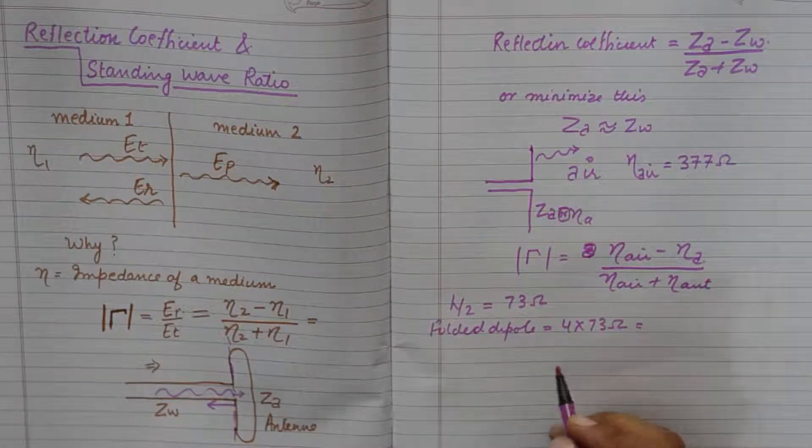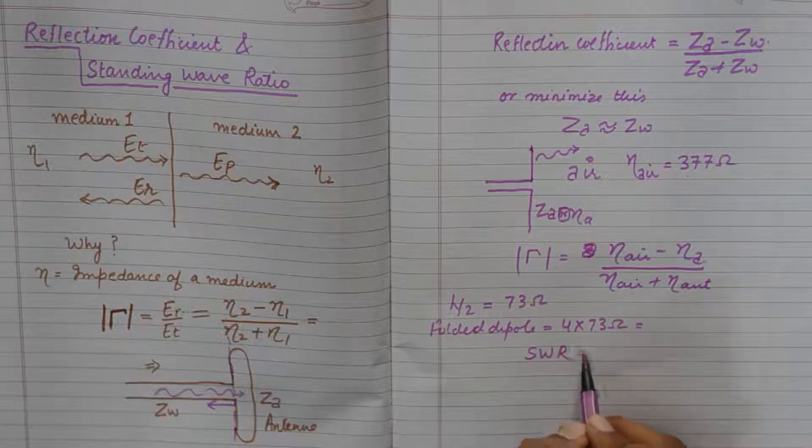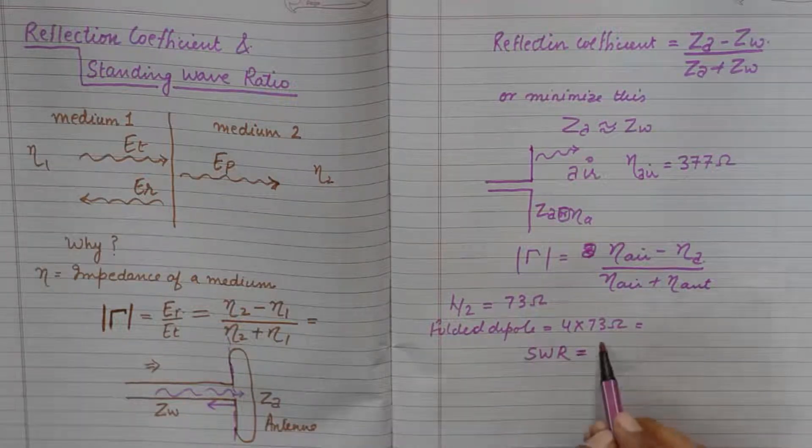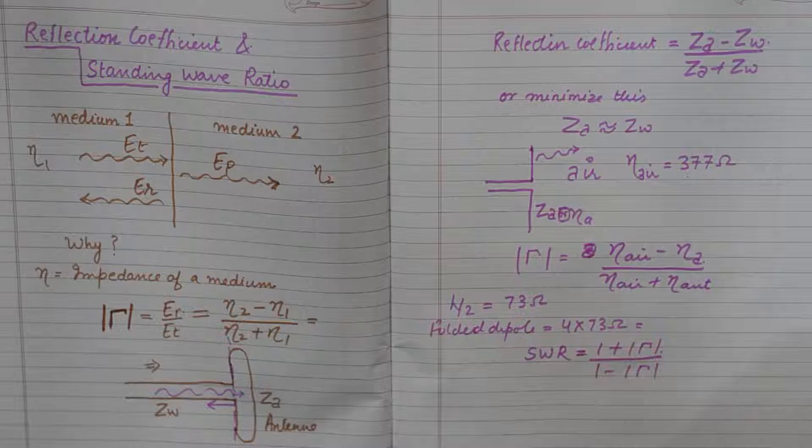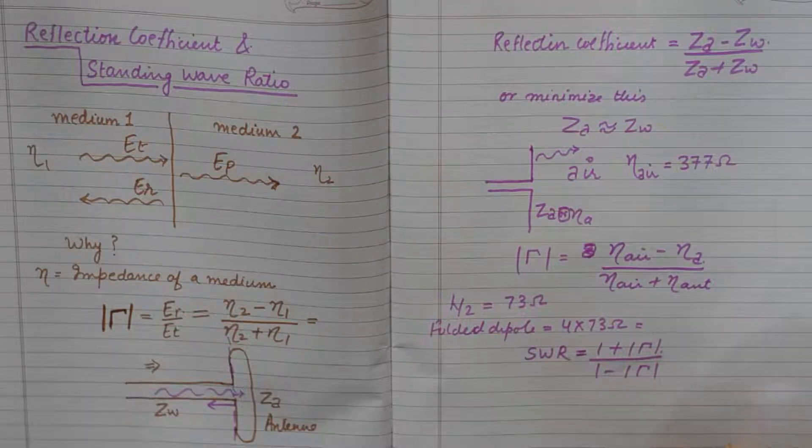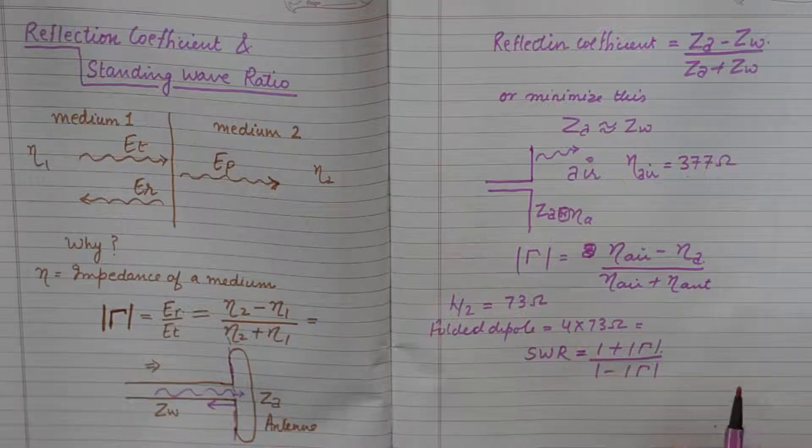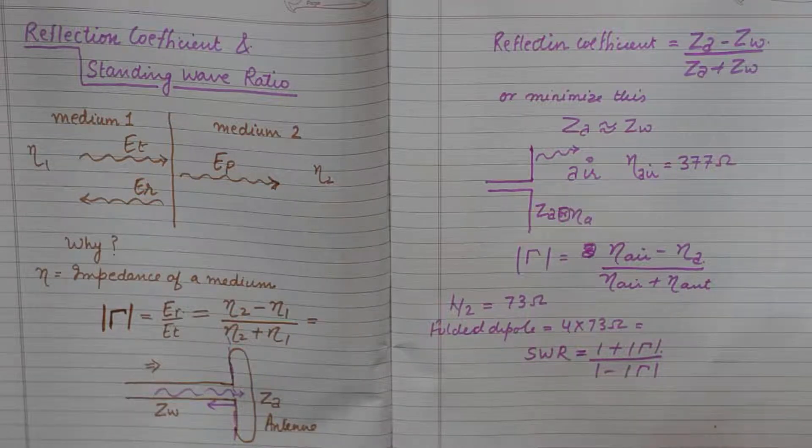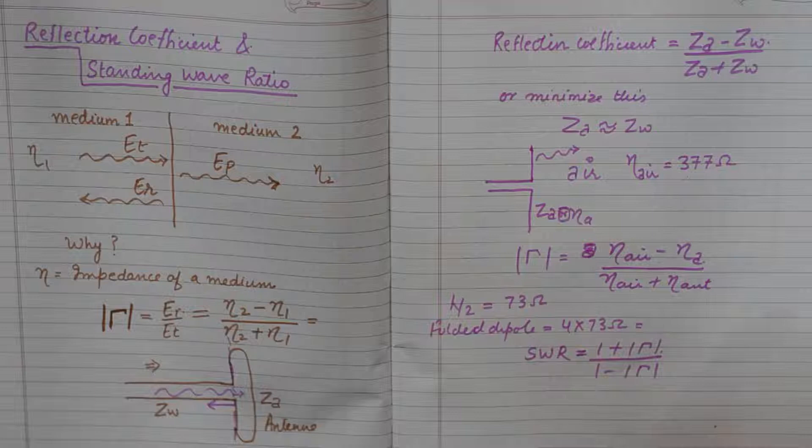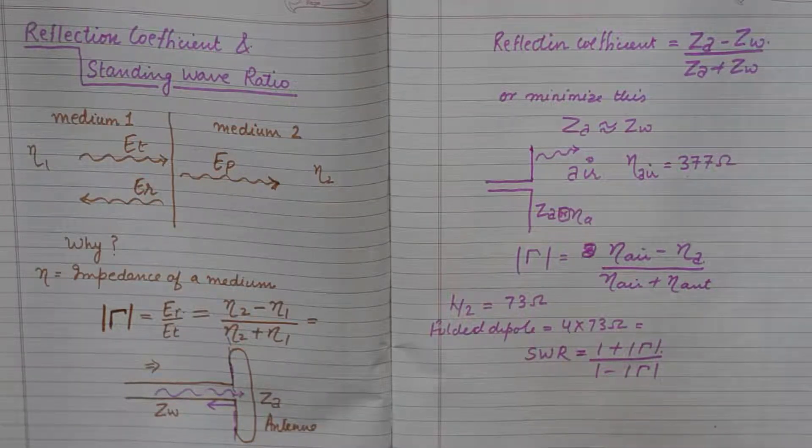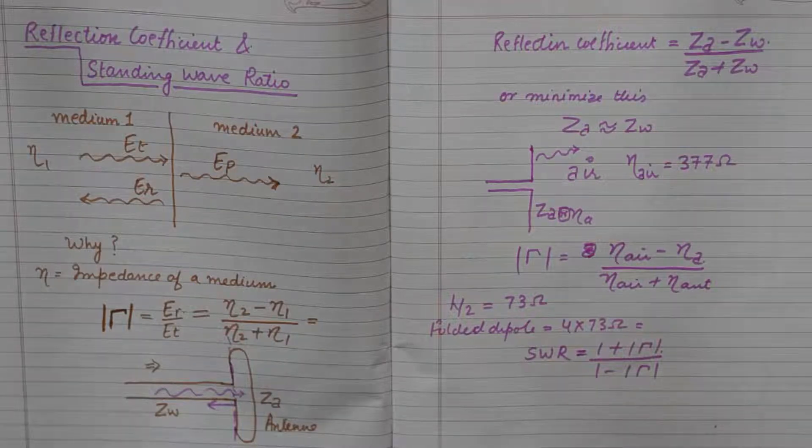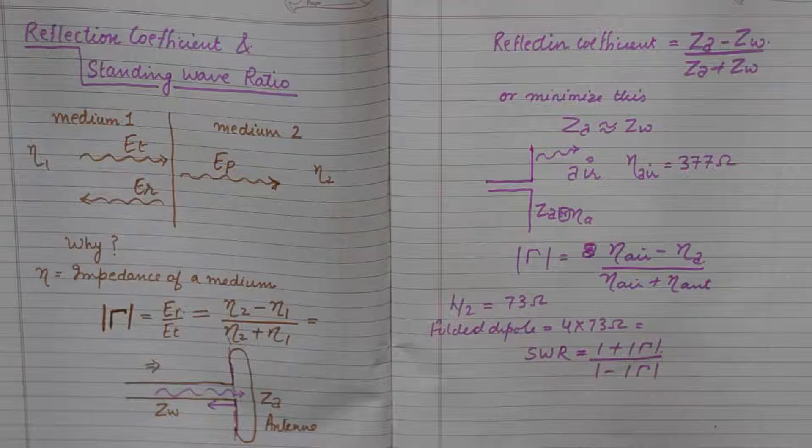And based upon reflection coefficient is our next parameter which is standing wave ratio. And this has a very simple formula of 1 plus reflection coefficient upon 1 minus reflection coefficient. The standing wave ratio is going to be larger if the reflection coefficient is larger. So we want the standing wave ratio to be as small as possible because it is the ratio of the reflected wave upon the incoming wave from the transmission system. We will talk about more of standing wave ratio in the coming tutorials.